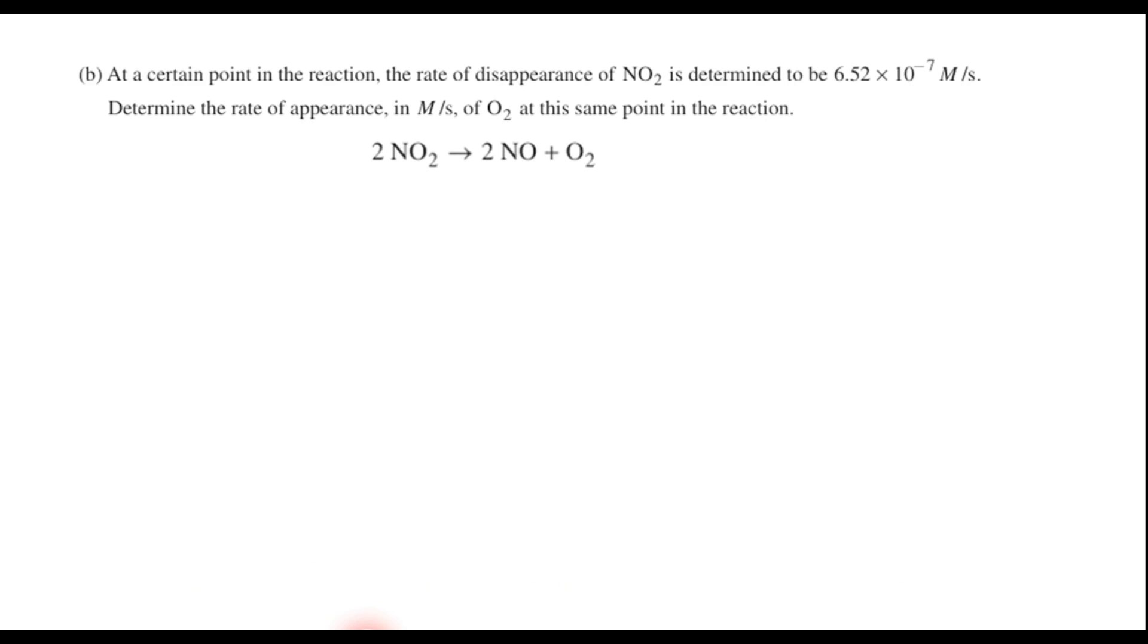On part B, at a certain point in the reaction, the rate of disappearance of NO2 is determined to be 6.52 times 10 to the negative 7th molarity per second. Determine the rate of appearance in molarity per second of O2 at this same point in the reaction. Well, what we have to do is realize that the rate of disappearance of one of the reactants is related to the rate of appearance of any of the products by just sheer stoichiometry. And since the mole ratio here is 2 to 1, the rate of disappearance of NO2 to the rate of appearance of O2 is going to be a 2 to 1 ratio.